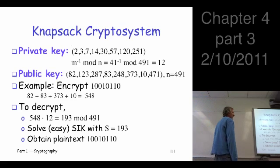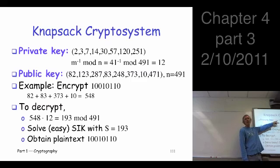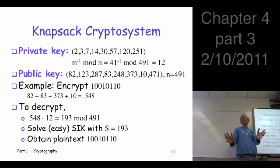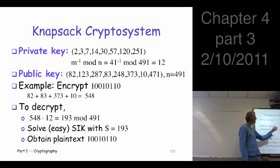Now the private key is going to be the super-increasing guy you started with, and the inverse of M, mod N. Not M itself. The multiplicative inverse. Again, which is easy to compute. We won't do that, but it's easy to find. And how do we know it exists? Because M and N were chosen to be relatively prime, so we know that M inverse exists. So in this case, turns out to be 12 if you just do the calculation.